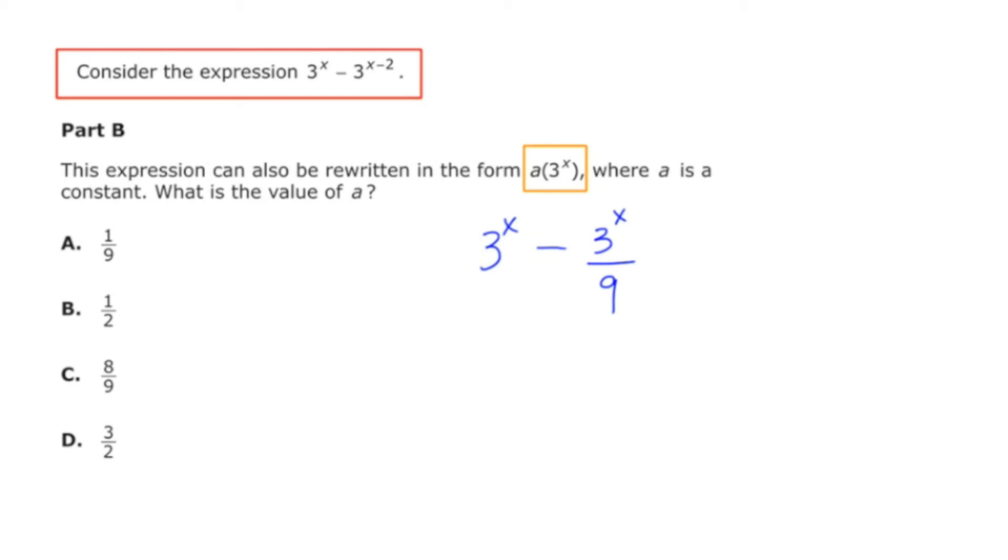In blue, this is where we've left off from part A. And what I'm going to do is I'm going to do a slight rewrite of the second term. And instead of calling it 3 to the x over 9, I'm going to call it 1 9th of 3 to the x. So I'm thinking of that 1 9th as a coefficient of this other expression, 3 to the x.